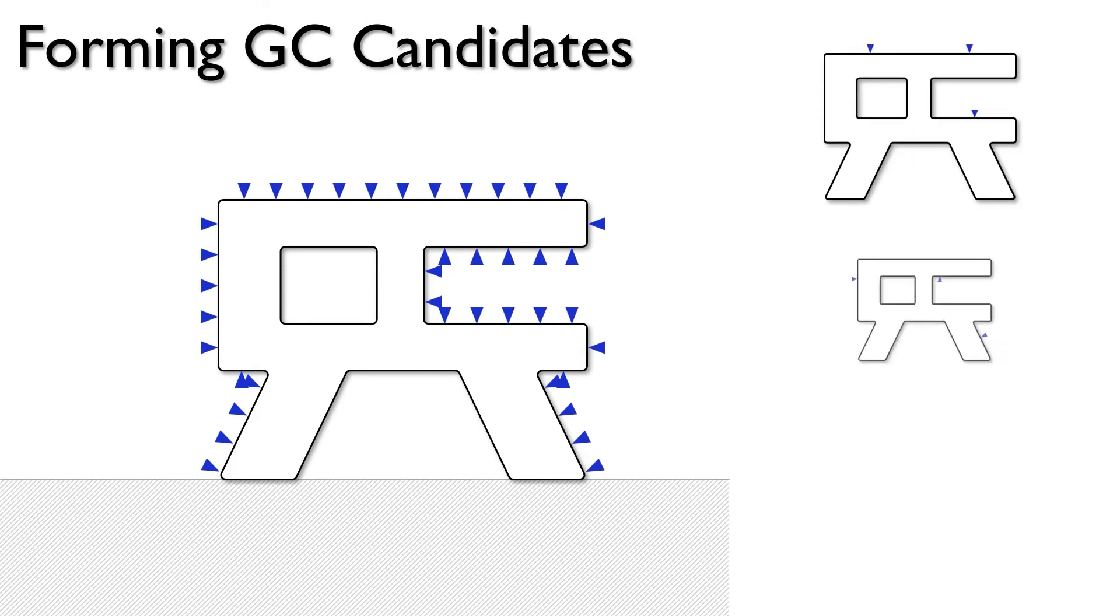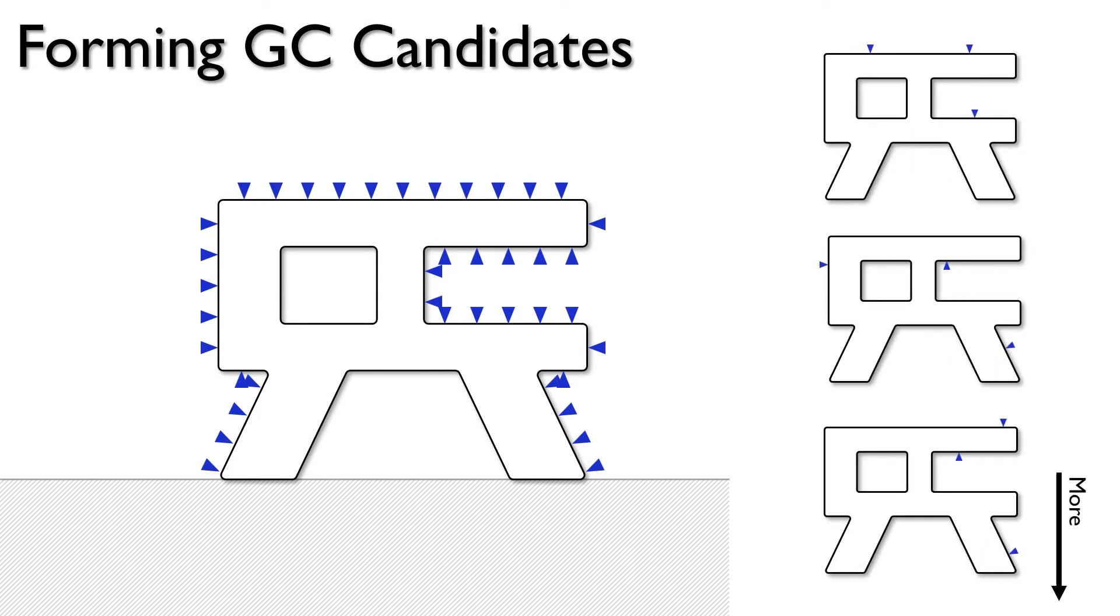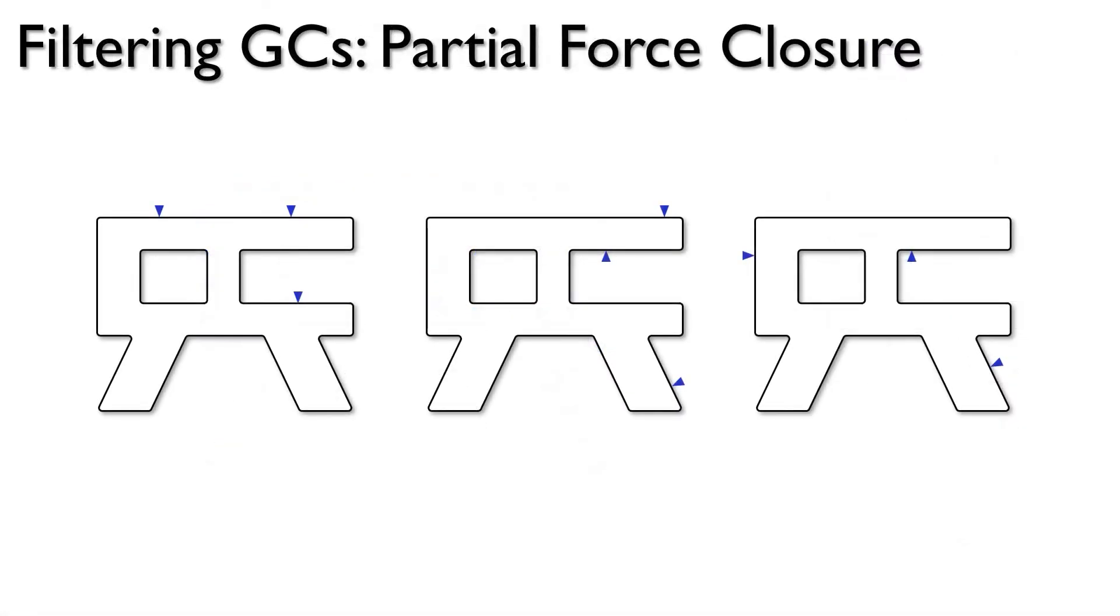Next, we repeatedly form a GC by randomly selecting 3 valid contact points. We then use 2 filters to remove undesirable GCs. Our first filter considers the stability of the object. Looking at these 3 examples, we can see that the object on the left is unstable because there is no upward support, where the 2 objects on the right can still be held stably.